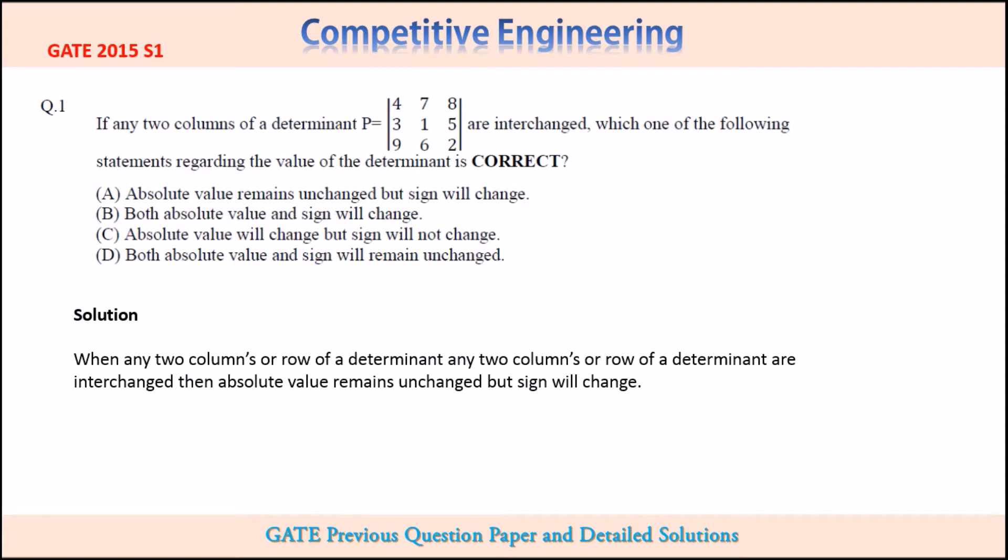If you are trying to find out the determinant of this matrix P, and after that you are changing the two columns, means 4, 3, 9 and 7, 1, 6 are interchanged, so the first column will be 7, 1, 6 and second column will be 4, 3, 9, then find the determinant again. The second value will be negative of the first value.